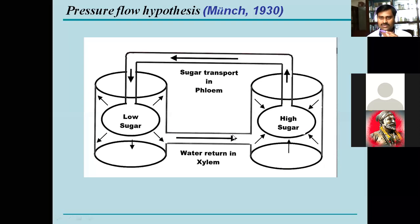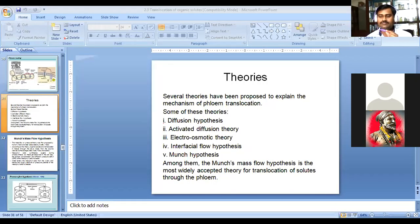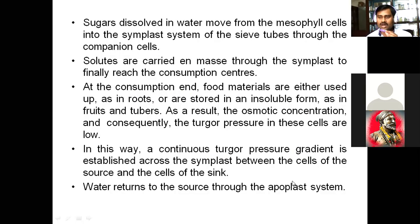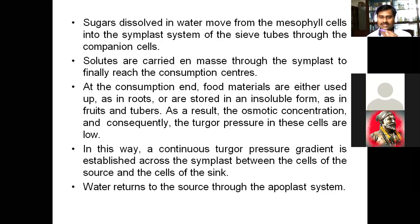In this hypothesis, sugar dissolved in water moves from the mesophyll cell in two ways: the symplast way or the apoplast way. Sugar dissolved in water in the mesophyll tissue moves mostly by the symplast way — across the cytoplasm, through the membrane — and then moves to the sieve tubes.